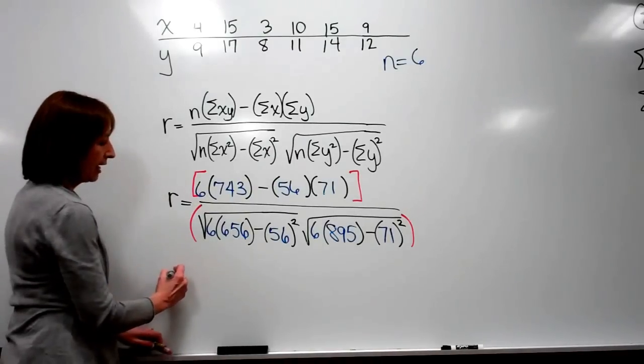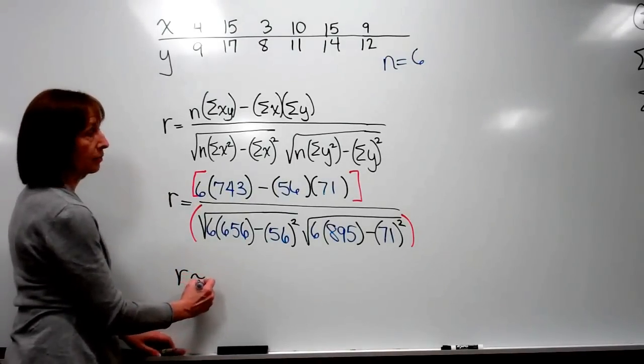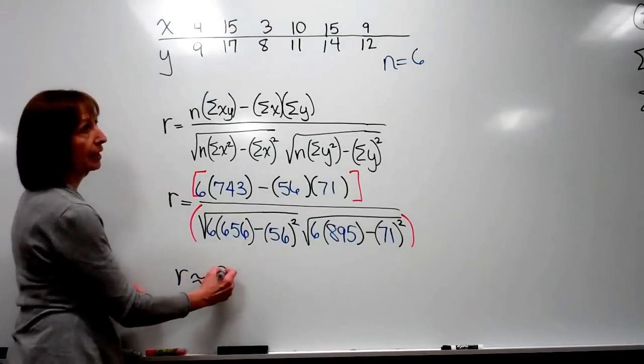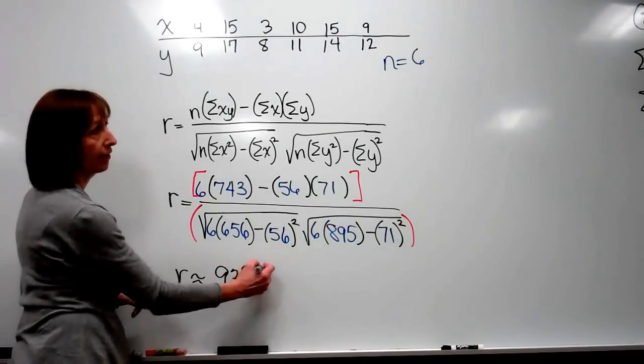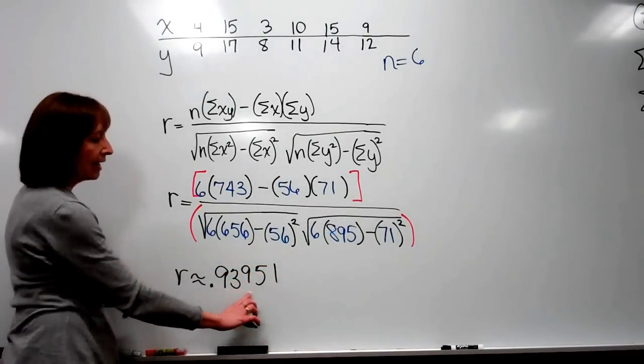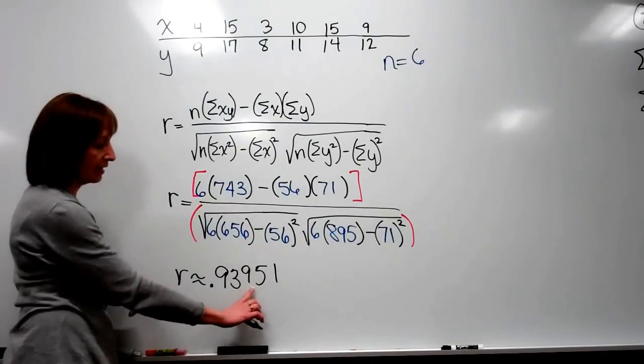And you should get r is approximately equal to .93951, and a lot of times we approximate this to three decimal places.